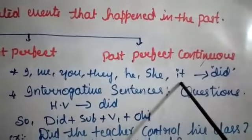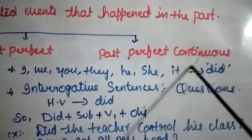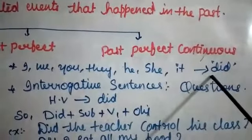You may have one doubt: with which subjects do we use 'did'? In simple present, 'do' is used with I, we, you, they, and 'does' is used with he, she, it. But in simple past, with all subjects — I, we, you, they, he, she, it — we have to use the helping verb 'did' only.